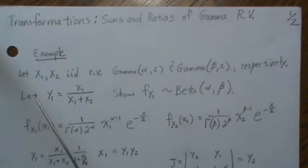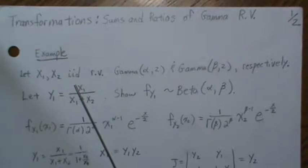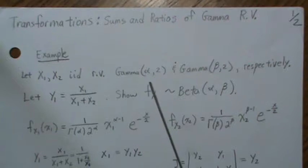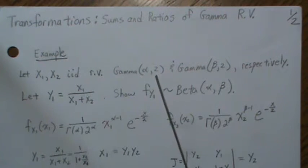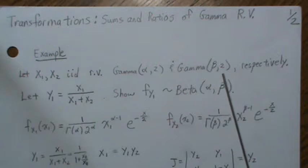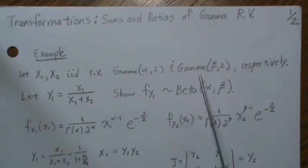Let's jump right in. Let X1 and X2 be independent identically distributed random variables of gamma(α,2) and gamma(β,2) respectively. So X1 is distributed with this, X2 is distributed with this.